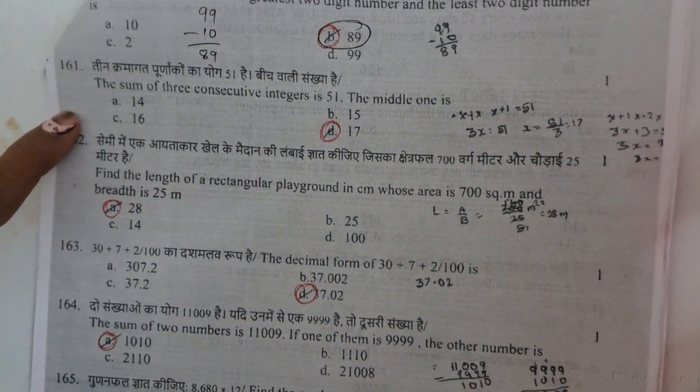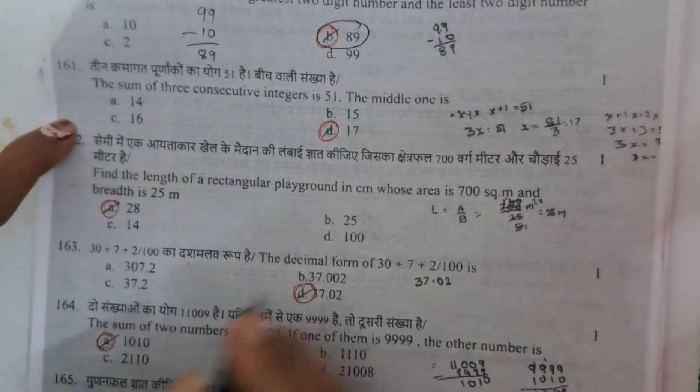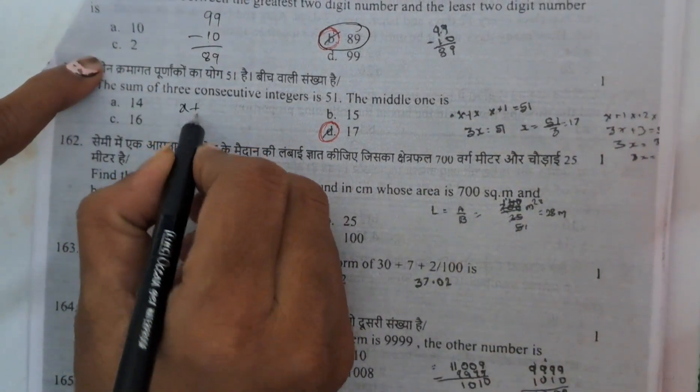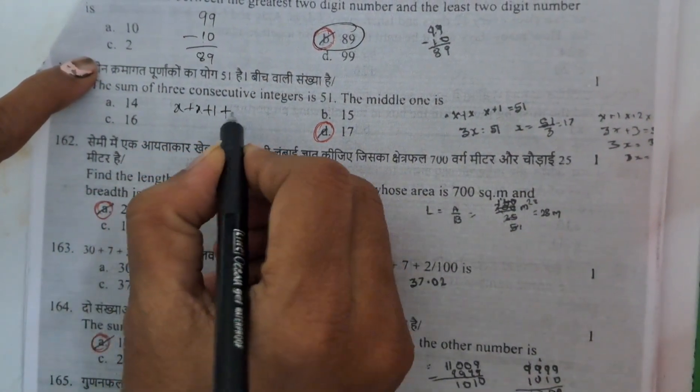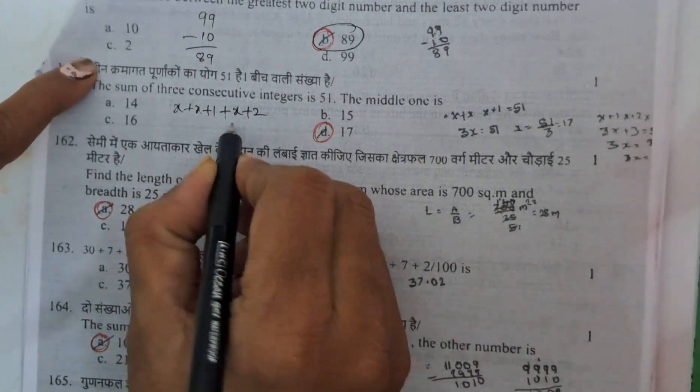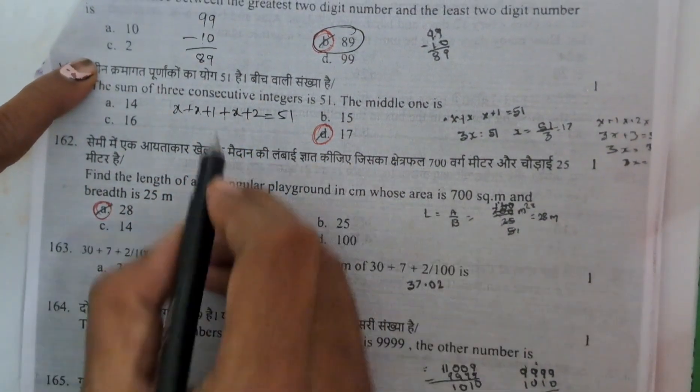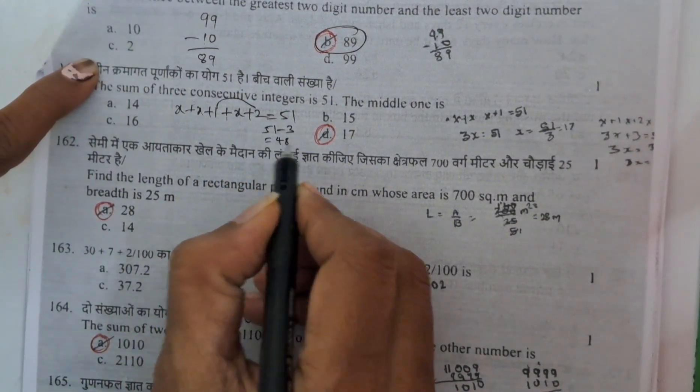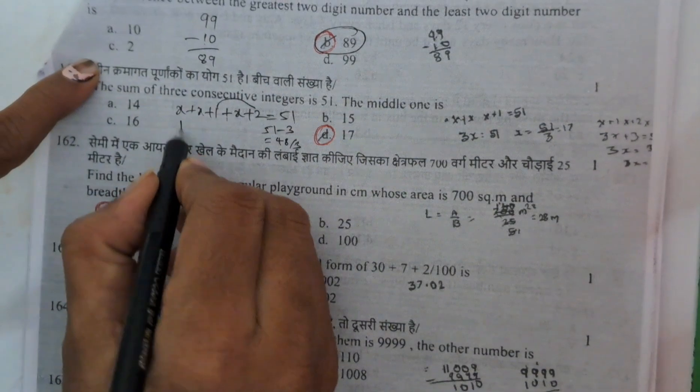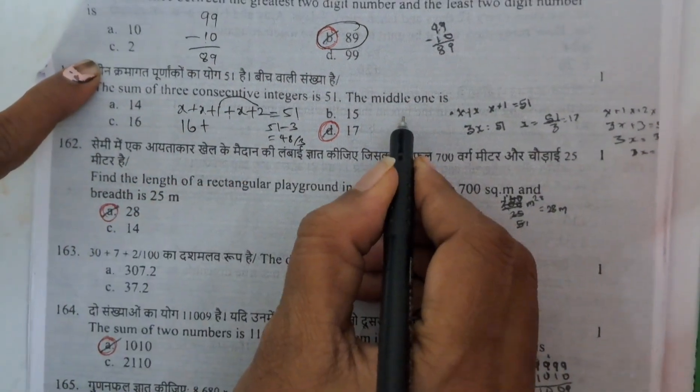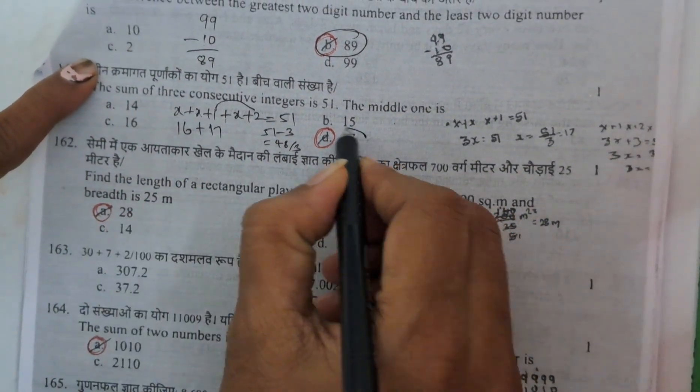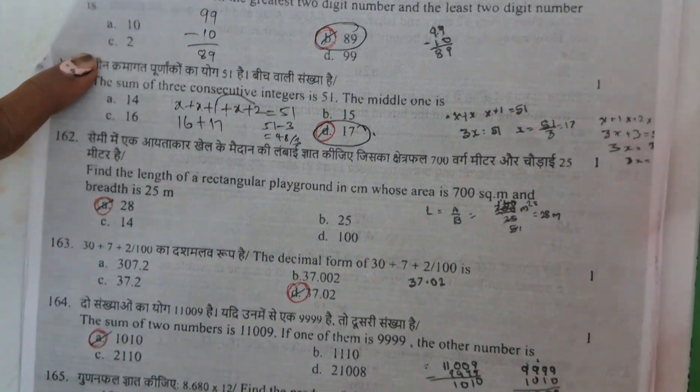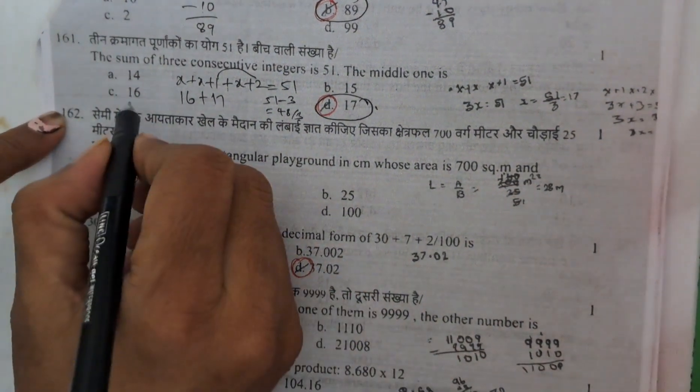And the sum of 3 consecutive number integers is 15. The middle one. Here suppose X, X plus 1 consecutive means beside numbers, 1 plus running numbers. X plus 2 equals to 51. 1 plus 2 is 3. 3 comes to here, 51 minus 3 is 48 by 3. The answer is 16 is the X. But here they are asking middle one means 17. This question is little bit confused because all will keep the chances of 16.